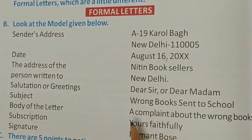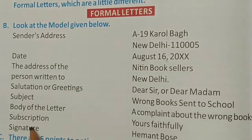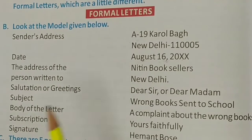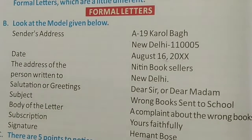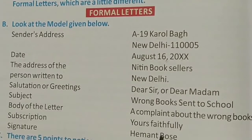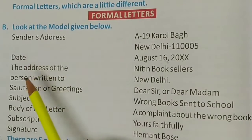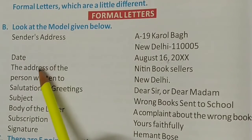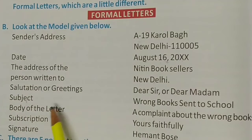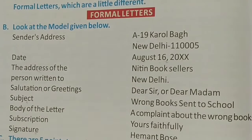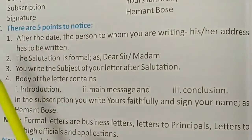After the body comes the subscription — like Yours Faithfully, Yours Sincerely, Yours Obediently, or Yours Truly. Last is the signature — the name of the sender, like Hemant Bose. So the format of a formal letter is: sender's address, date, address of the person written to, salutation, subject, body of letter, subscription, and signature.